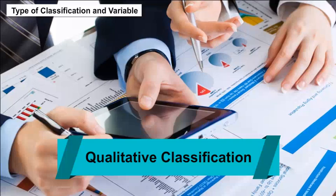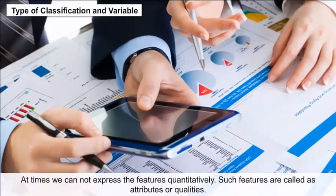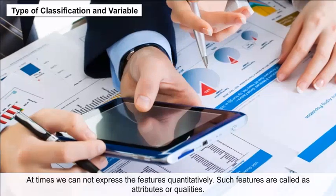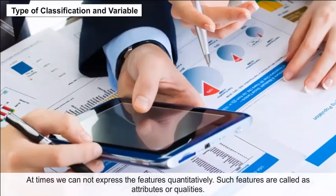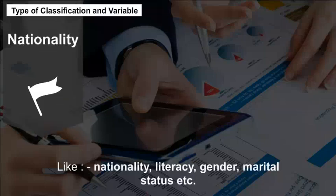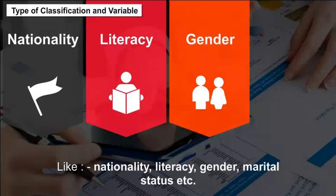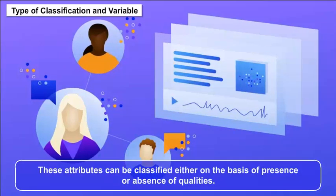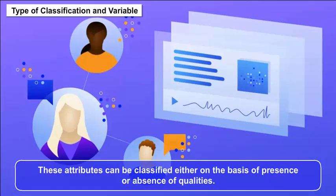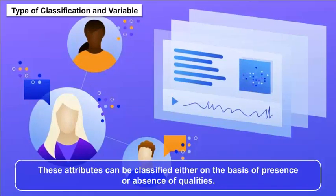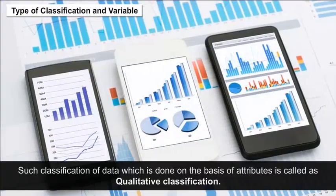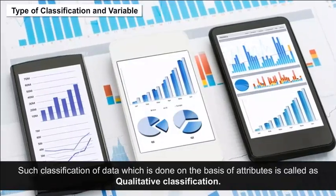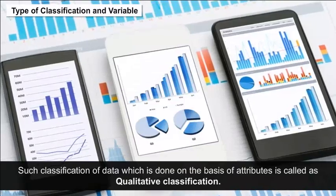Qualitative classification: At times, we cannot express features quantitatively. Such features are called attributes or qualities, like nationality, literacy, gender, marital status, etc. These attributes can be classified either on the basis of presence or absence of qualities. Such classification of data done on the basis of attributes is called qualitative classification.